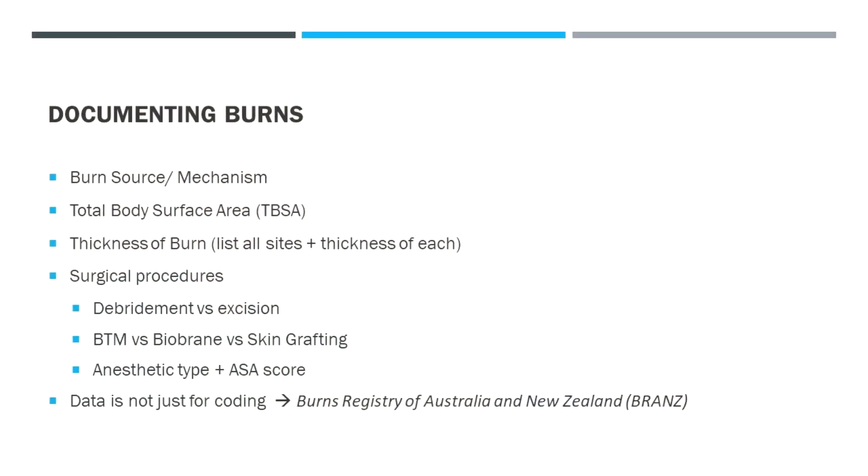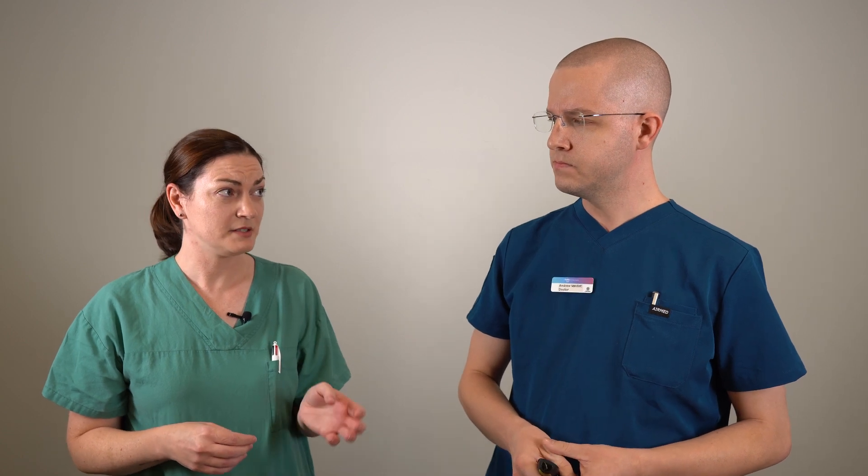Debridement versus excision makes sense clinically, and the progress in skin grafting and alternatives to skin has really advanced in the last two decades. We now use Biobrane and BTM — both are skin substitutes, defined as either epidermal or dermal. Biobrane is a temporary skin substitute that replicates the epidermis layer; it comes off after 14 days and is used to speed up spontaneous wound healing. BTM is a dermal skin substitute — the second layer of skin — it stays in the body, and after four to six weeks of integration you have a neodermis, after which a skin graft is applied on top.